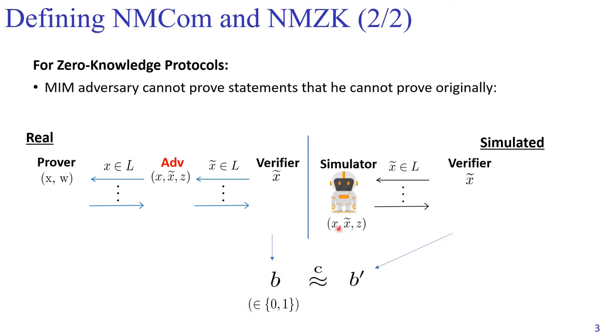As you can see, if the simulator manages to do so, that means what the adversary did in the real world can be done by an efficient machine, which is the simulator, without having the interaction with the left honest prover. This is how we capture the requirement written above.